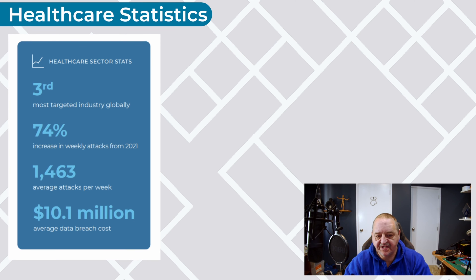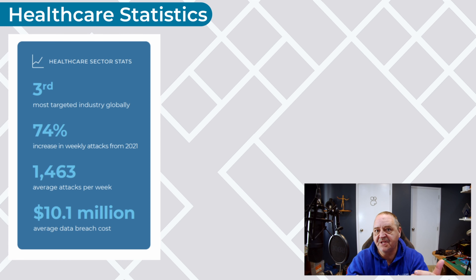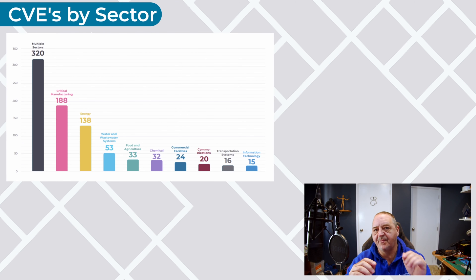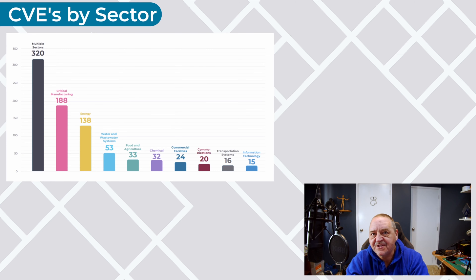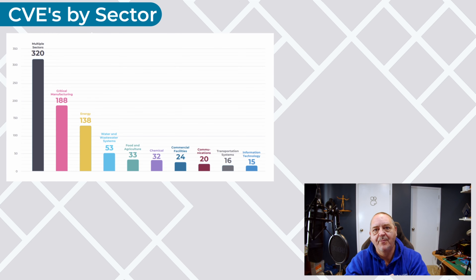Healthcare has gathered some really interesting statistics in the first six months of 2023. A lot of people have been waiting for healthcare to step into the limelight in the cybersecurity space, and maybe this is it — nearly 1,500 attacks per week. That is staggering. Looking at CVEs released by sector: the multiple sectors column is probably always the highest, but seeing critical manufacturing as number two is notable. We're used to seeing energy and water/wastewater up in higher levels, but to have them passed by manufacturing is really interesting.